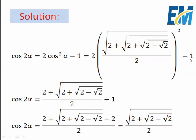We can write minus 1 as −2/2, so the terms simplify. The 2s cancel and we get cos(2α) = √(2 + √(2 − √2)) / 2. However, cos(2α) still has three nested square roots, so it cannot be used directly. We need to compute cos(4α) next.